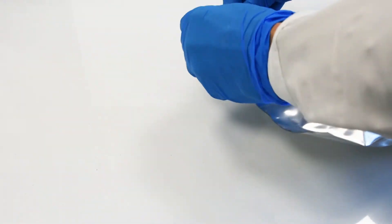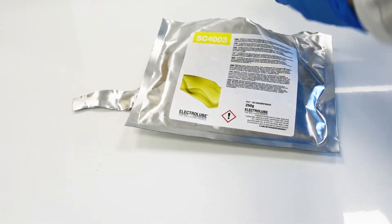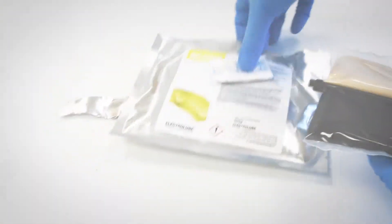It is important with a silicone not to remove the resin pack from the aluminium foil until immediately before use to avoid moisture ingress. To begin the mixing process, remove the pack from its packaging.